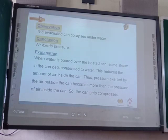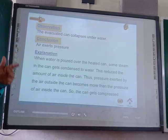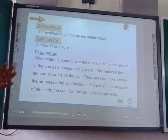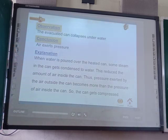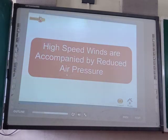The explanation: when water is poured over the heated can, some steam inside the can gets condensed back to water. Condensation is the process of conversion of water vapor into water. The moment steam condenses, the air pressure inside the can reduces compared to the pressure outside — the atmospheric pressure. Since atmospheric pressure outside is now more than the pressure inside the can, it pressurizes and collapses the can. Conclusion: air exerts pressure.